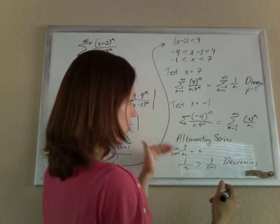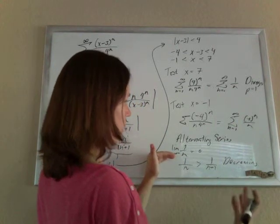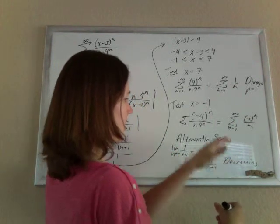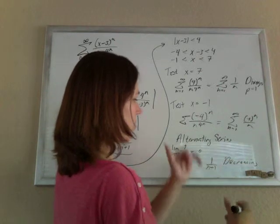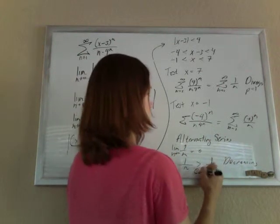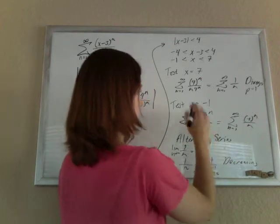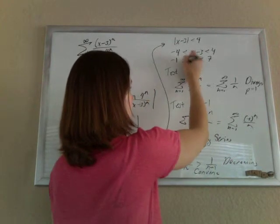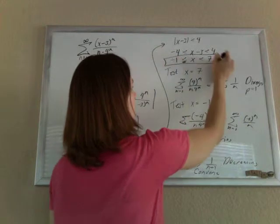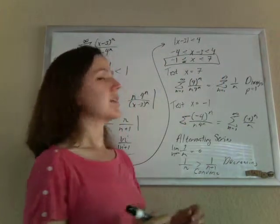So those are your criteria, that the limit goes to 0, which has to be true for all series, and then it's decreasing, then your alternating series will converge. And so, yay, when x is negative 1, that'll converge, so I get to put an equal sign right there, and there that is. Cool.